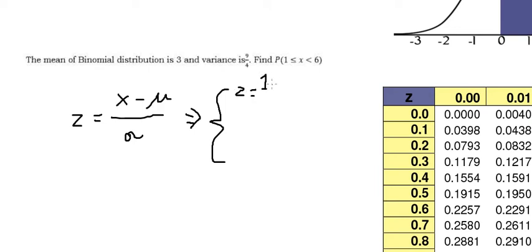The first one, we have number one. μ is the mean, so we have number three. σ is the standard deviation, but we have variance here. So σ should be the square root of 9 over 4.